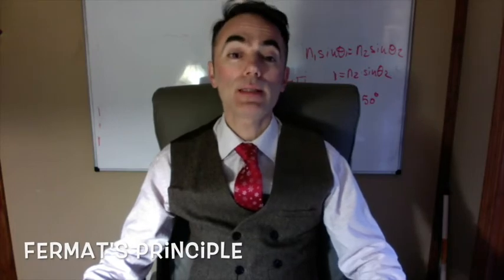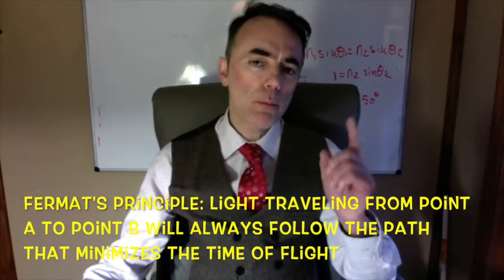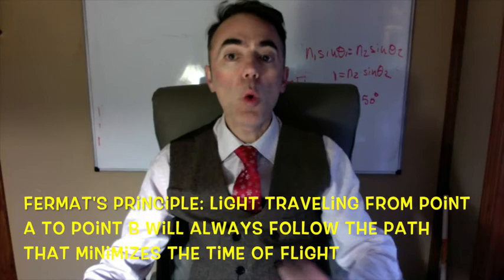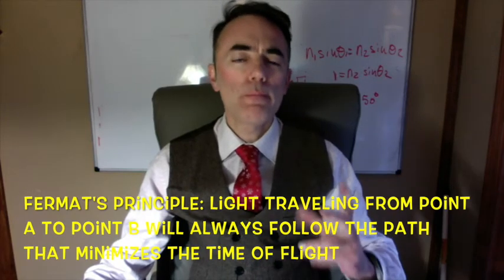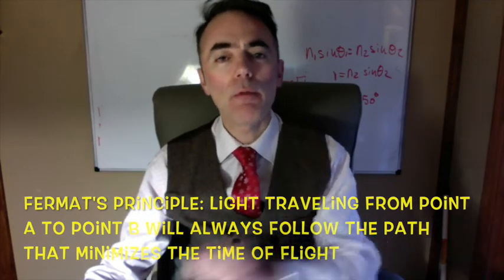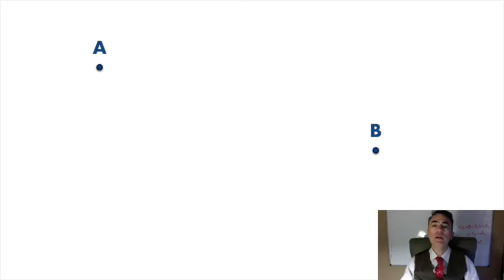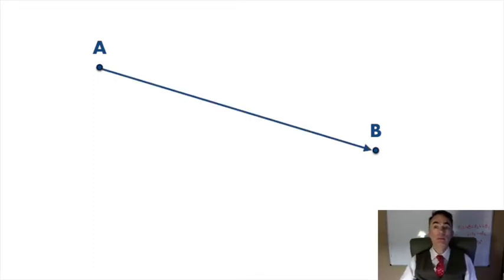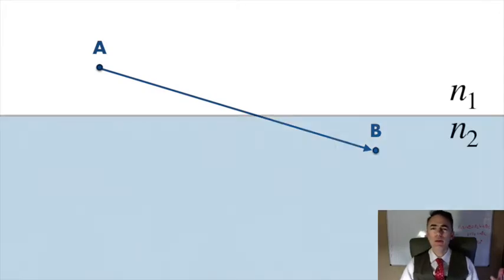what Fermat's principle states is that light traveling from point A to point B will always follow the path that minimizes the time of flight. If there is only one medium, this path will be a straight line from A to B. But if there is a change of medium, then the path will not just be one single straight line.